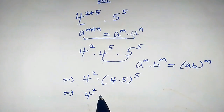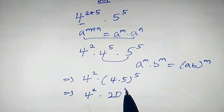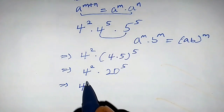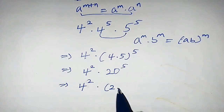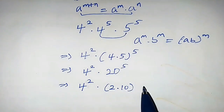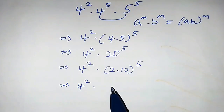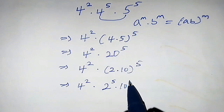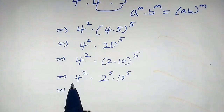So we now have 4 squared times 20 raised to power 5. We can write 20 as 2 times 10, so 4 squared times (2×10) raised to power 5. Splitting this, we get 4 squared times 2 raised to power 5 times 10 raised to power 5, since we can separate factors when the power is the same.